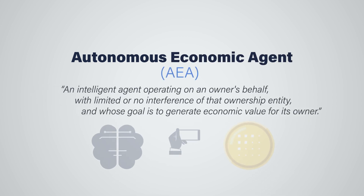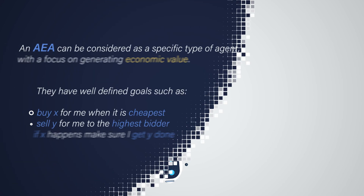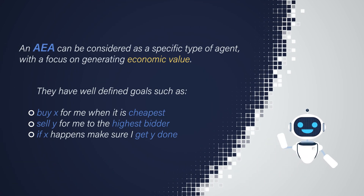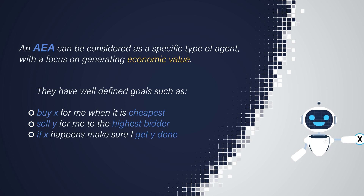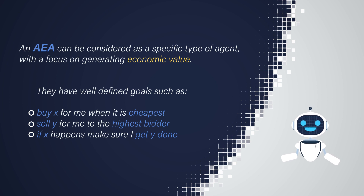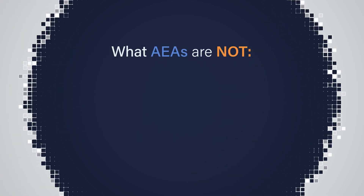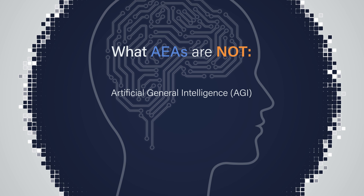An AEA is an intelligent agent operating on an owner's behalf, with limited or no interference from that ownership entity, and whose goal is to generate economic value for its owner. AEAs have well-defined goals, such as: buy X for me when it is cheapest, sell Y for me to the highest bidder, or if X happens, make sure I get Y done. However, it is important to remember that AEAs are not Artificial General Intelligence. Unlike AGIs, AEAs have a narrowly defined goal, with a directed focus that involves some economic gain.